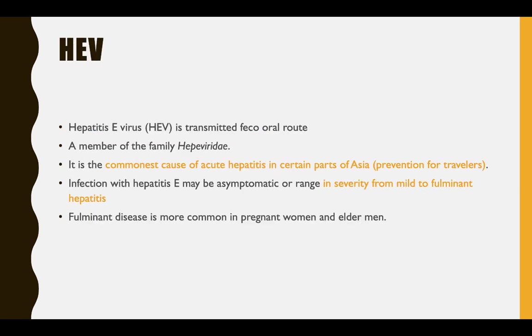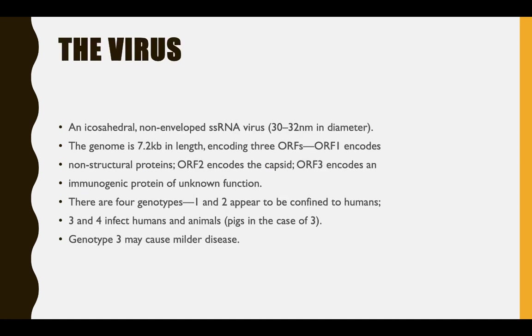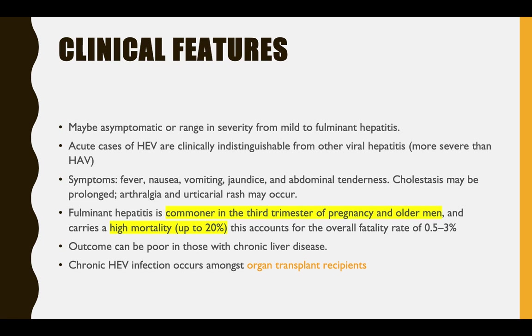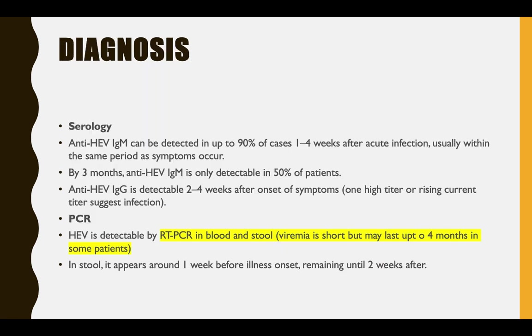Hepatitis E is a common cause of acute hepatitis in certain parts of Asia. Epidemiology is similar to Hepatitis A — it is waterborne, transmitted through contaminated water. For clinical features, it is similar to HAV but with some important differences. The prognosis is generally good, but not excellent. HEV is more severe in third-trimester pregnancy and in older men, carrying a high mortality in these groups. For serology, anti-HEV IgM can be detected in 90% of cases within four weeks.